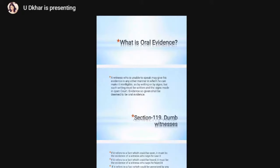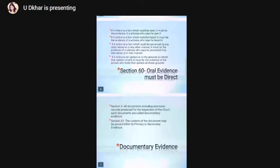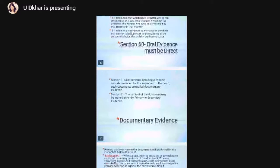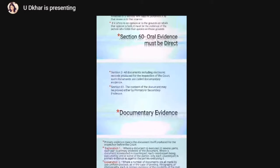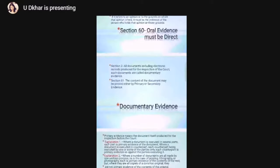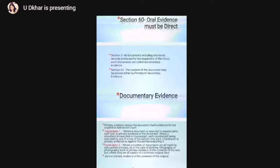Thereby, we can see that oral evidence does not only mean the evidence of that person who holds that opinion. Now, we have understood about oral evidence. What is documentary evidence? Section 3 of the Indian Evidence Act says all documents, including electronic records, produced for the inspection before the court — such documents are called documentary evidence. These documents are of two types: primary or secondary evidence.